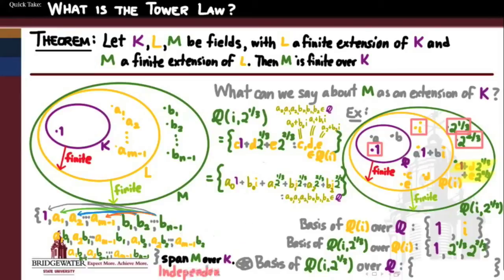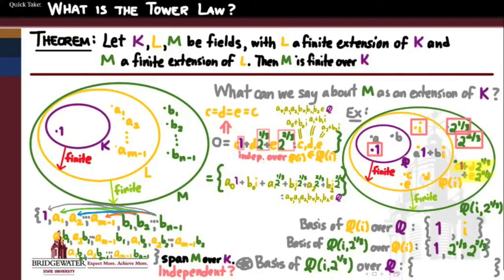The big question is whether these elements are linearly independent over K. If they are, they form a basis for M over K, and we can state exactly what the degree of M over K is. Let's check in our specific case. If 1, 2^(1/3), and 2^(2/3) are independent over the Gaussian rationals, then any linear combination of those three equal to zero forces the coefficients C, D, E to be zero. Since C, D, E belong to Q(i), they are each written as A+Bi form, with rational A and B.